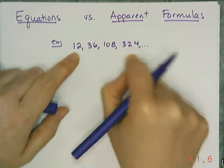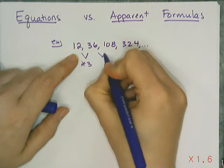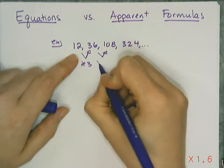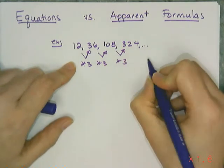Or I can think of it as, oh hey, I'm multiplying by 3, and I'm multiplying by 3, and multiplying by 3, which means this thing is geometric.